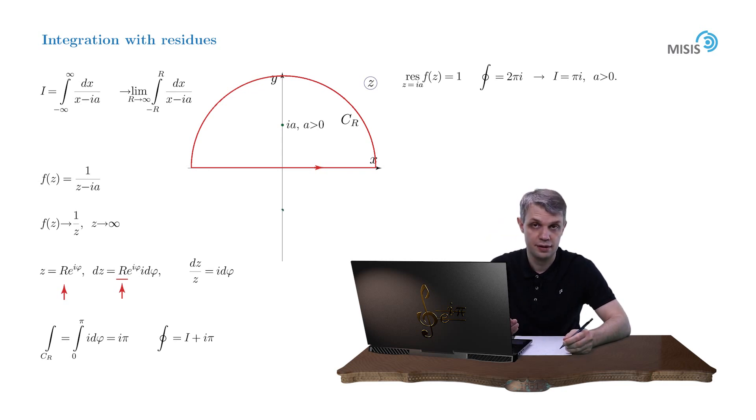If a is negative, then there are no poles inside the contour, and the closed-contour integral is equal to 0. And our original integral is reduced to minus pi i for negative a.